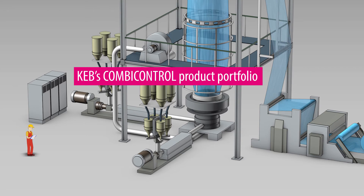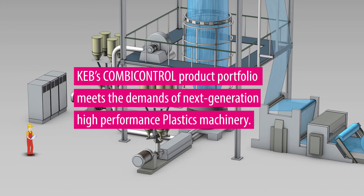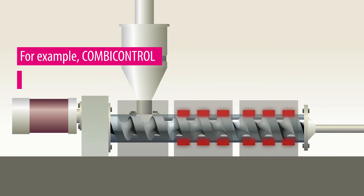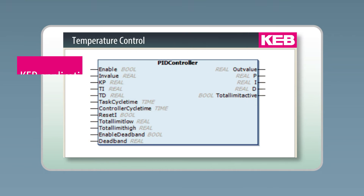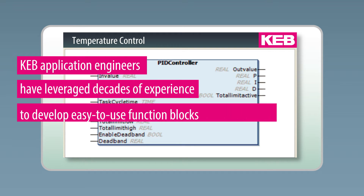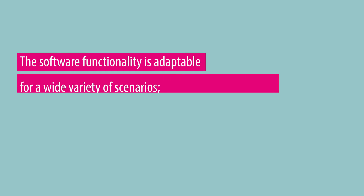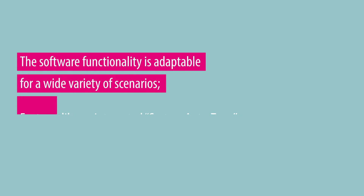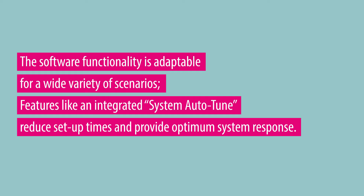KEB's Combivis Connect product portfolio meets the demands of next-generation, high-performance plastic machinery. For example, Combivis Control can achieve precise temperature control. KEB application engineers have leveraged decades of experience to develop easy-to-use function blocks specific for the plastics application. The software functionality is adaptable for a wide variety of scenarios, and features like an integrated system autotune reduce setup times and provide optimum system response.